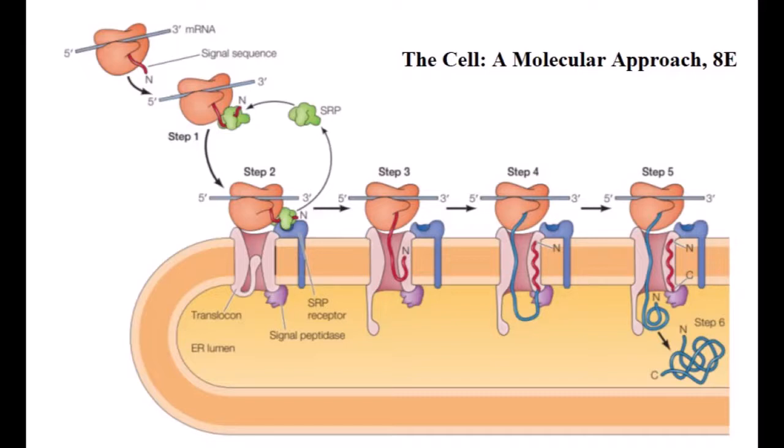In the third step, the SRP is released and the ribosome binds to the translocon. Insertion of the signal sequence then opens the translocon.